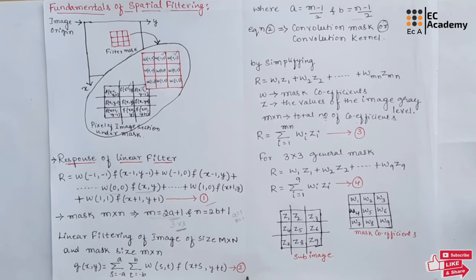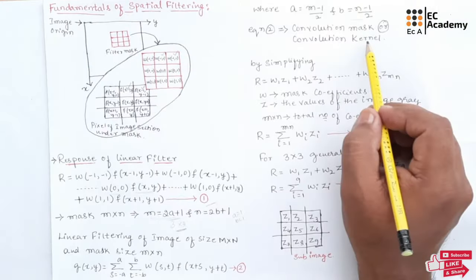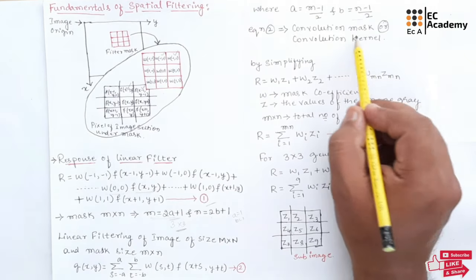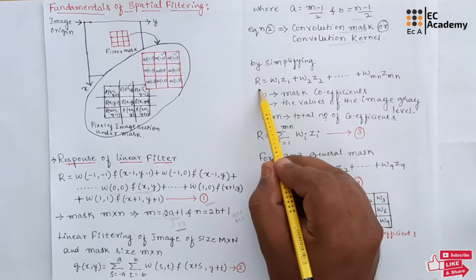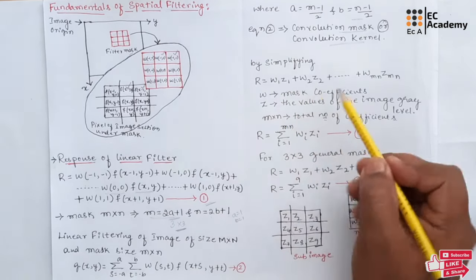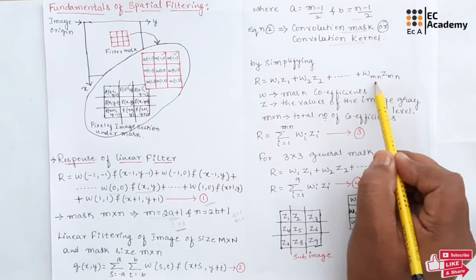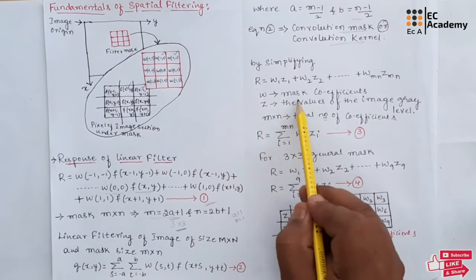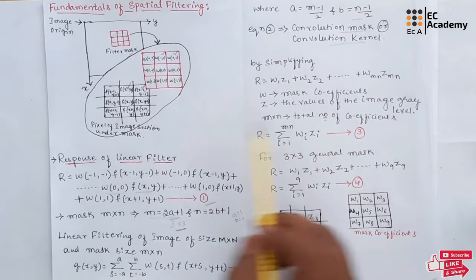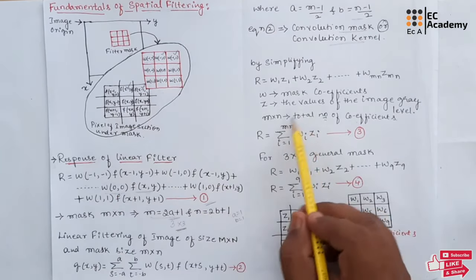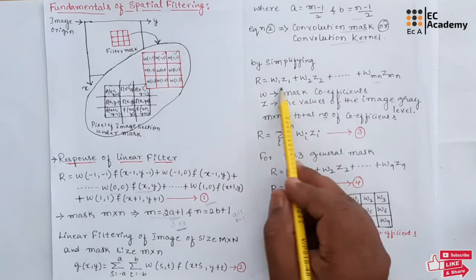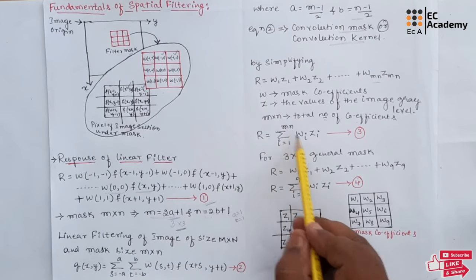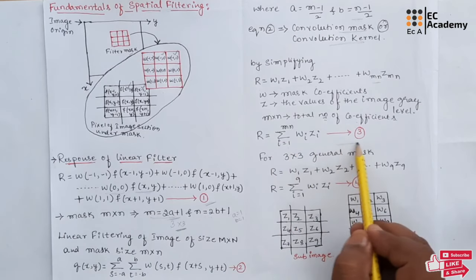Equation 2 is similar to the frequency domain concept of convolution. For this reason, linear spatial filtering is often referred to as a convolution mask or convolution kernel. If we simplify equation 1, we can write it as r = w1·z1 + w2·z2 + … + w_mn·z_mn, where w represents the mask coefficients, z is the image gray level value, and m×n is the total number of coefficients. In general, this equation is written as r = summation from i=1 to mn of w_i·z_i. Let us call this equation number 3.